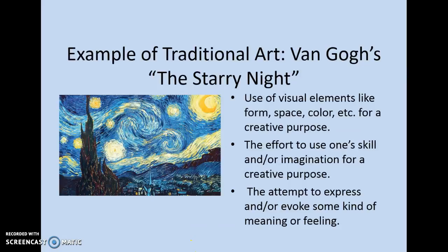Our first example of traditional art is Van Gogh's The Starry Night. I've never heard anyone say that's not art — everyone seems to agree. It's more traditional, more what we'd expect of art. It has those visual elements, definitely has effort to use skill and imagination for a creative purpose, and there's meaning and feeling in this work both on the part of the artist and in our response to it. Of course, it has the support of tradition, so we're already inclined to accept it as art.